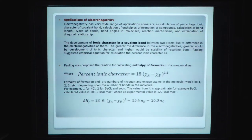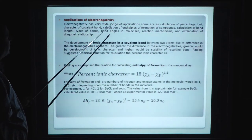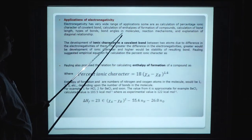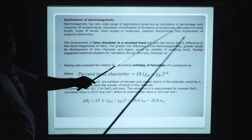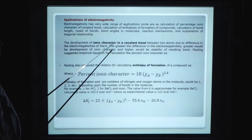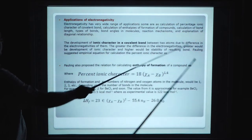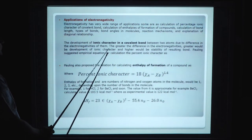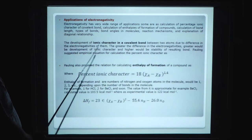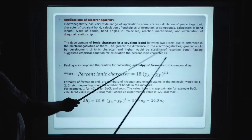Application of electronegativity. Electronegativity has very wide range of applications. Some are calculation of percentage ionic character of covalent bond, calculation of enthalpy of formation of compound, calculation of bond length, type of bond, bond angle of molecule, reaction mechanism and explanation of diagonal relationship. The development of ionic character in a covalent bond between two atoms is due to difference in electronegativities of them. The greater the difference of electronegativities, greater will be the development of ionic character. Higher would be stability of resulting bond.